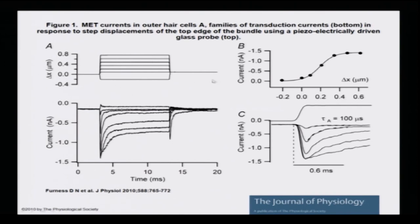The x-axis shows delta x, the deflection, and the y-axis plots the current. You can see the different currents at different time points. These nanoampere currents are very small, but good enough to encode the piece of information being processed by the hair cells.